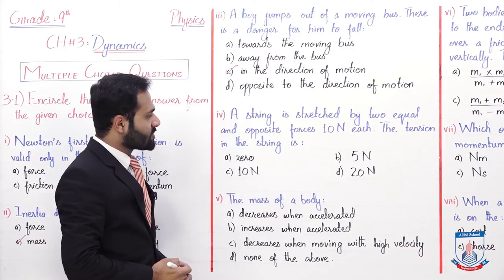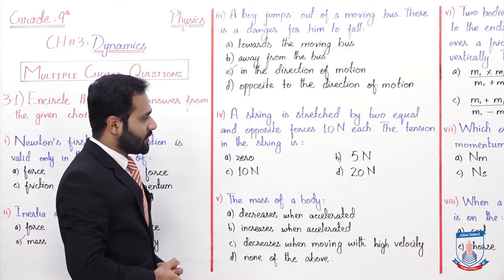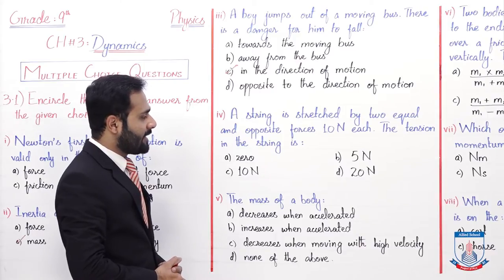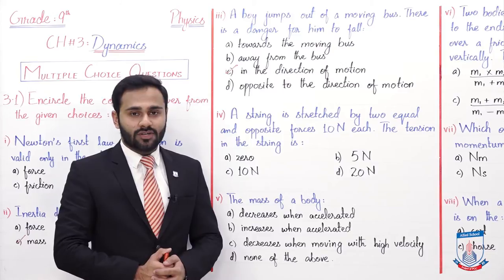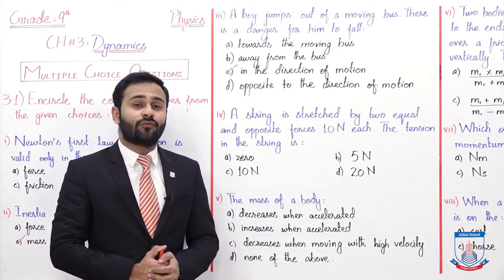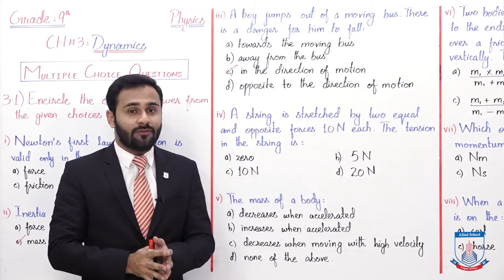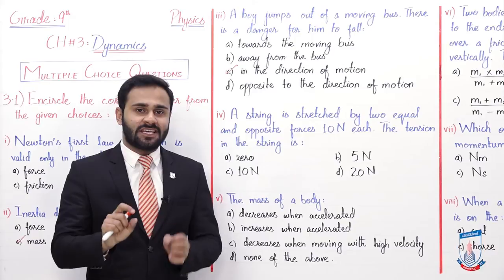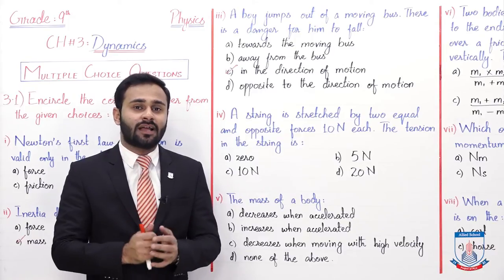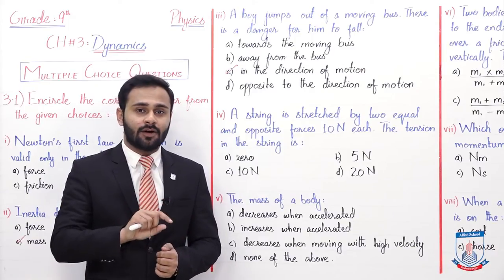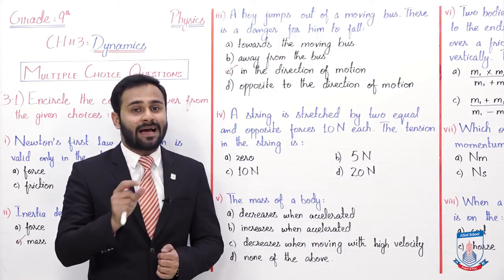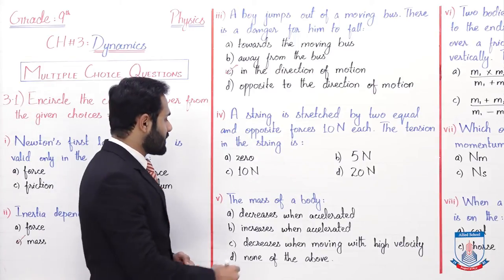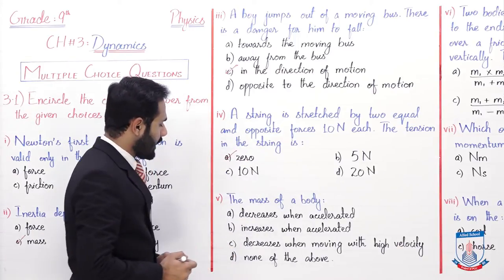And the next MCQ: a string is stretched by two equal and opposite forces 10 newton each, the tension in the string is a 0, b 5 newton, c 10 newton and d 20 newton. If both forces have opposite directions and same magnitude of 10 newton, then the net force is 10 minus 10, so the net force becomes 0. So the correct option is A.